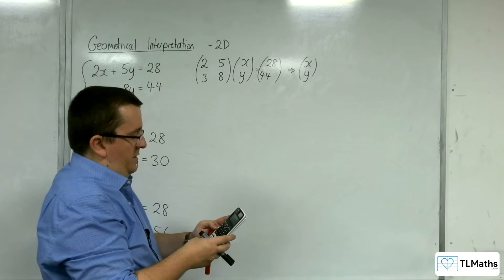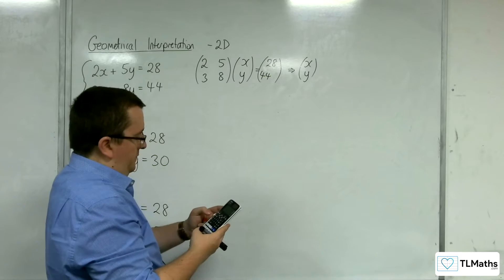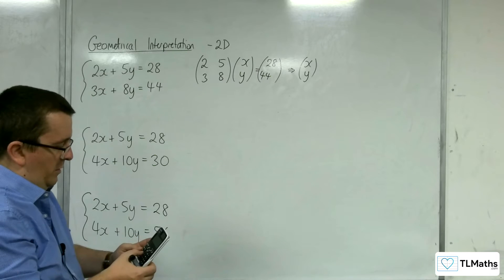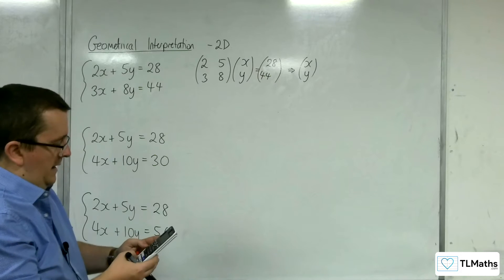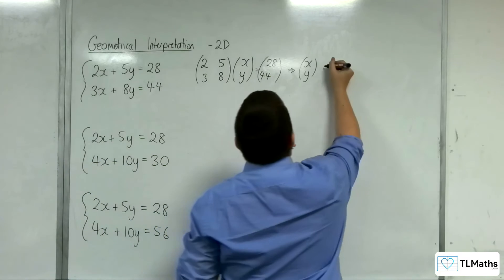And define the second matrix, two rows, one column, 28, 44. Then in the matrix calculation, we're going to do matrix A to the minus 1 times by matrix B. And we get 4, 4.